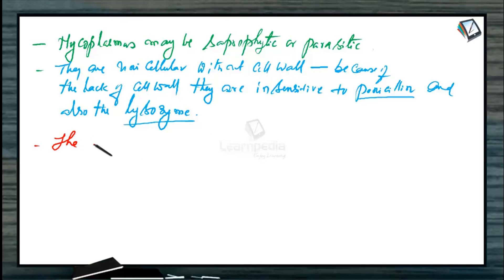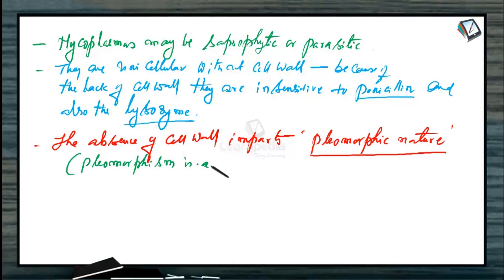The absence of cell wall imparts pleomorphic nature. Pleomorphism is a phenomenon where any cells, including bacteria or these mycoplasmas, change their shape, structure, etc.